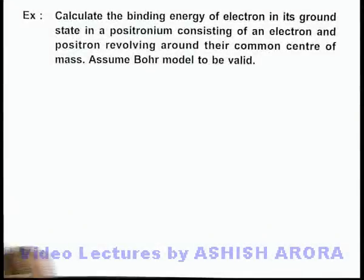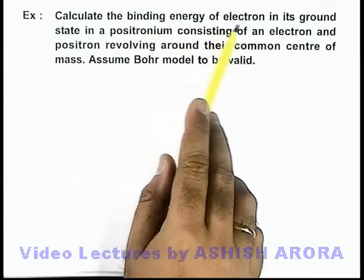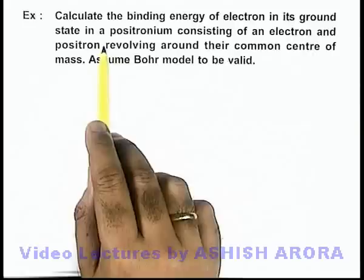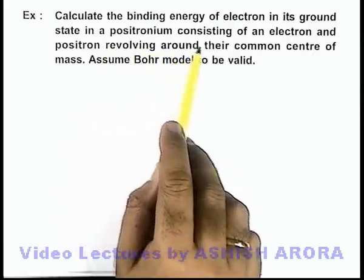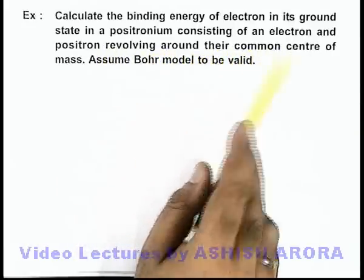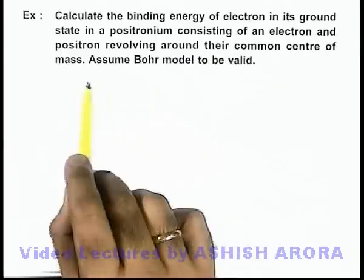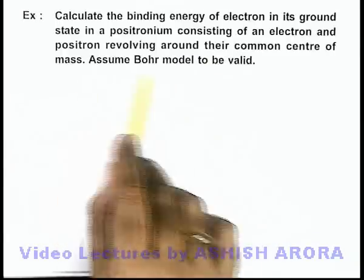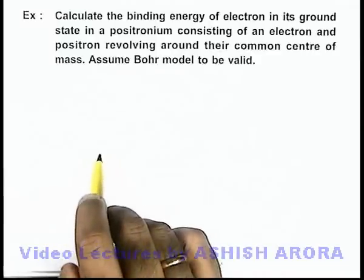In this example, we are required to calculate the binding energy of electron in its ground state in a positronium, which consists of an electron and a positron revolving around their common center of mass. We can assume Bohr model to be valid in this situation.